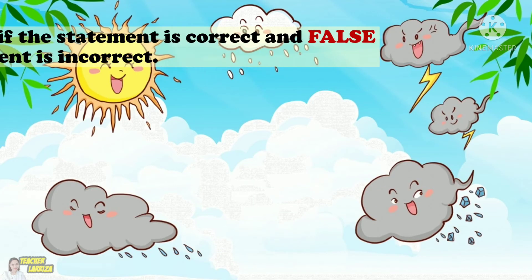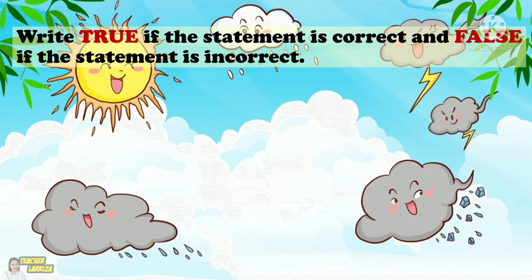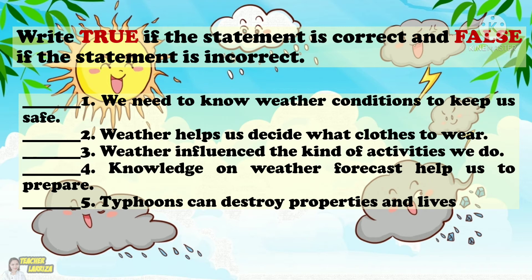For our second activity, write true if the statement is correct and false if it is incorrect. 1. We need to know weather conditions to keep us safe. 2. Weather helps us decide what clothes to wear. 3. Weather influences the kind of activities we do. 4. Knowledge on weather forecasts helps us to prepare. 5. Typhoons can destroy properties and lives.